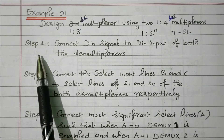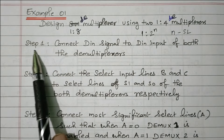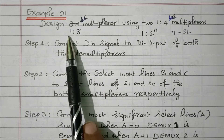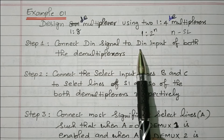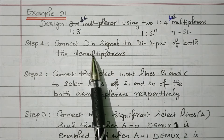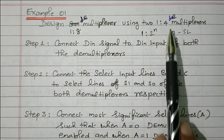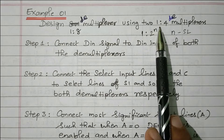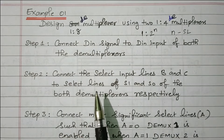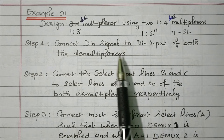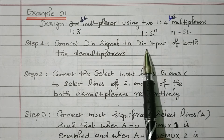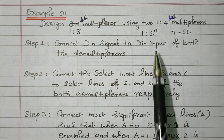Now we will see this design step by step. Step 1: connect the Din input signal to the Din input of both demultiplexers. So the input signal is given to both demuxes. We are using two 1-to-4 demultiplexers to design a 1-to-8 demultiplexer, and the input Din is connected to both.